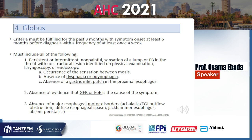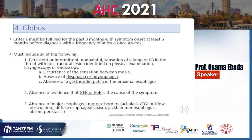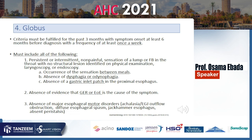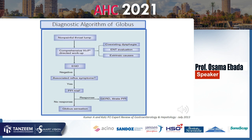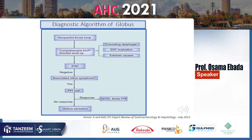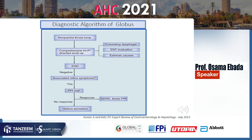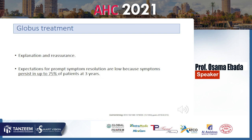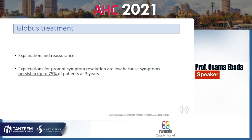Globus is the fourth functional esophageal disorder — occurring at least once a week — defined as a sensation of a lump or foreign body in the throat, without true dysphagia. It can occur between meals, with no dysphagia or odynophagia, and endoscopy shows no gastric inlet patch, no esophagitis, and no motor disorder. The algorithm involves ruling out extrinsic causes, upper endoscopy, and a PPI trial if reflux symptoms are present. Reassurance and explanation are the main treatment, as symptoms persist in up to 75% of patients for more than three years.